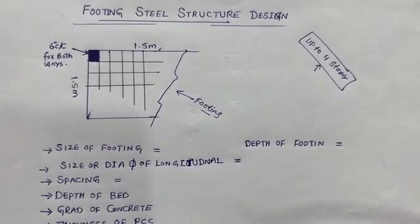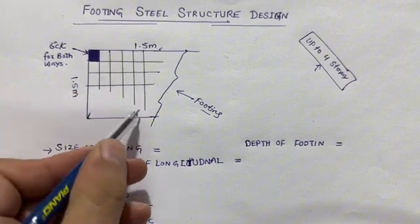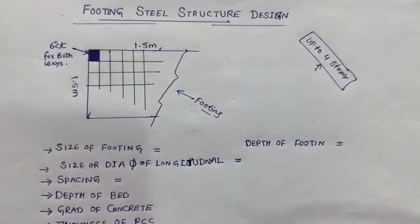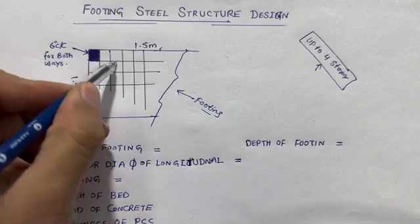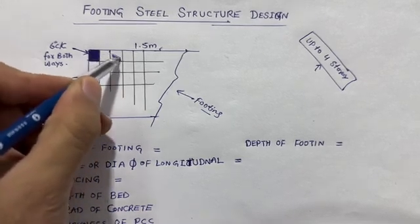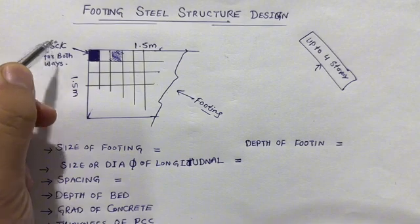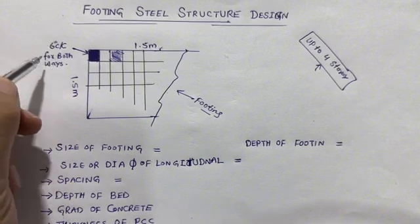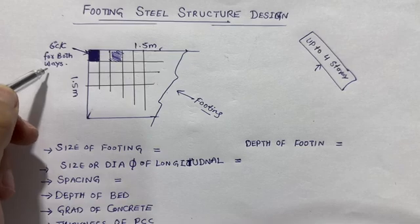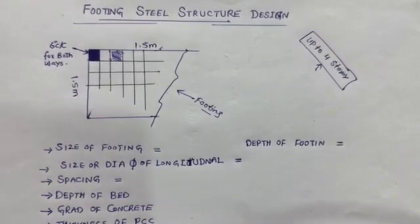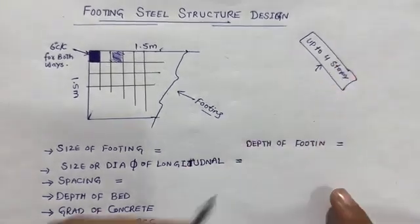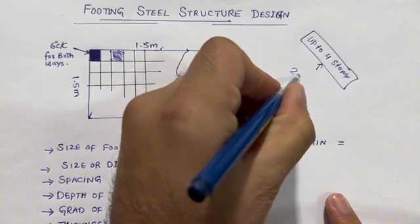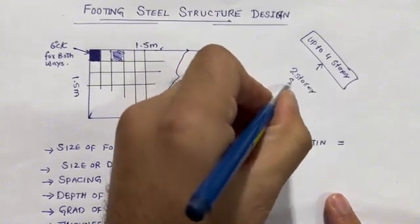Here we have main bars and distribution bars. The spacing of main bars and distribution bars should not be more than 6 inches center to center for both directions — main bars and distribution bars. Use doubly mesh for 4 storey. If you are building up to 3 storey or 2 storey, use singly mesh.